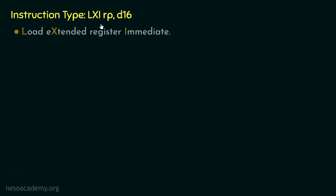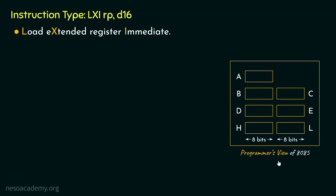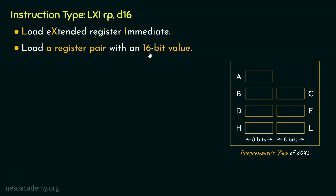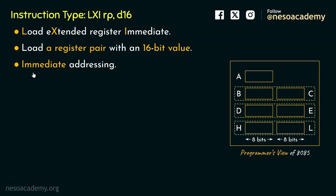The mnemonic LXI stands for Load Extended Register Immediate. In the programmer's view of the 8085, registers B, C, D, E, H, and L can also be used as register pairs. Using this type of instruction, we are trying to load a register pair with a 16-bit value. These register pairs — BC, DE, and HL — are also called the Extended Registers. Within this instruction, we are providing the 16-bit data with the instruction itself, so it is immediate addressing.